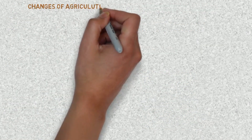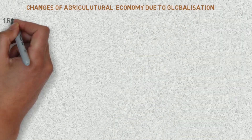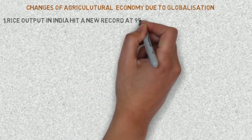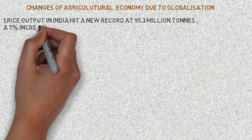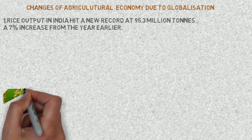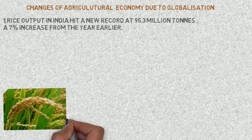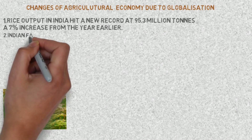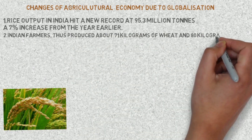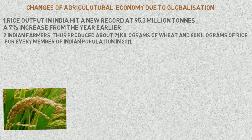Due to globalization, rice output in India hit a new record at 95.3 million tons, a 7% increase from the year earlier. Indian farmers produced about 71 kilograms of wheat and 80 kilograms of rice for every member of the Indian population.